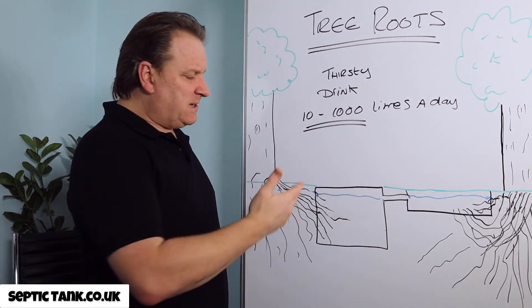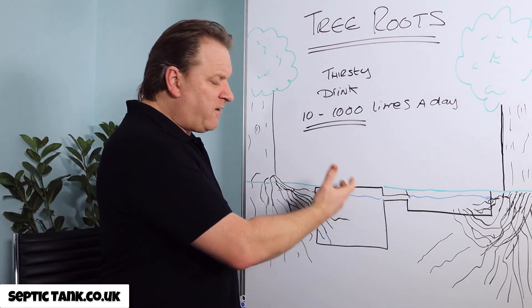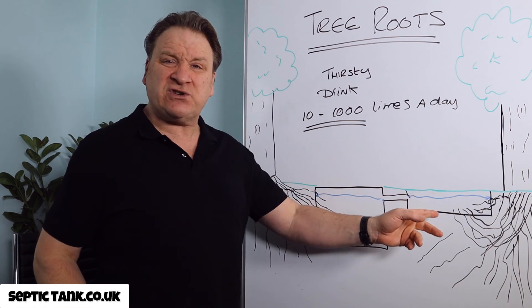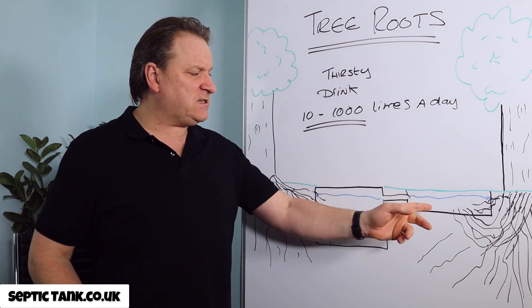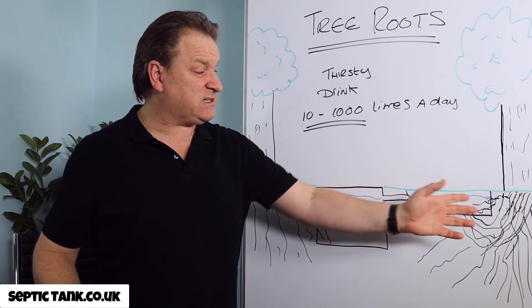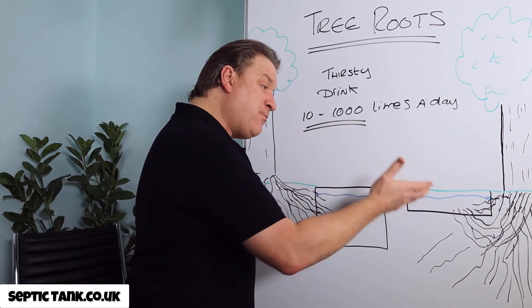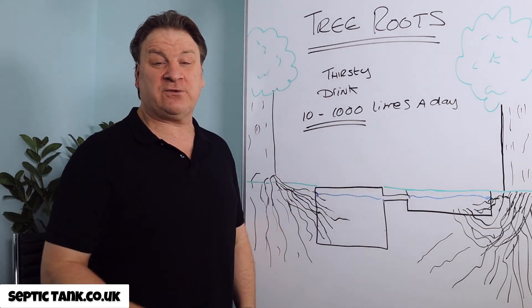So nine times out of 10, if you've got a plastic or a fiberglass septic tank, they won't have penetrated it. If they've penetrated your drainage field pipes or your soak away, just leave them to do their job. And that is to suck all the moisture and filth and debris out of there. In fact, they will keep your drainage field clean.